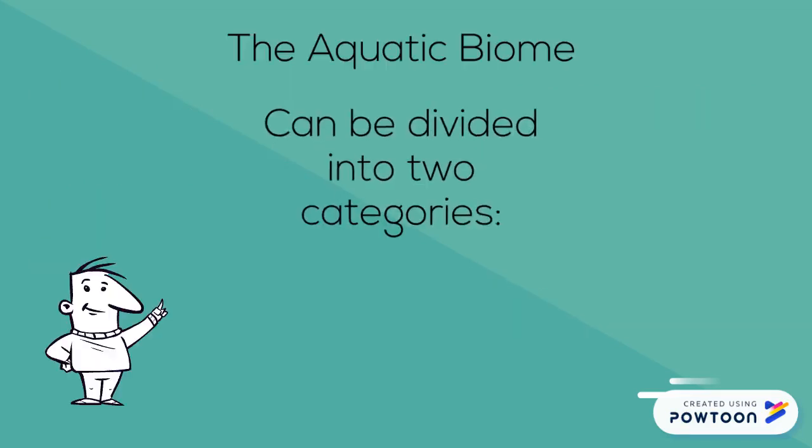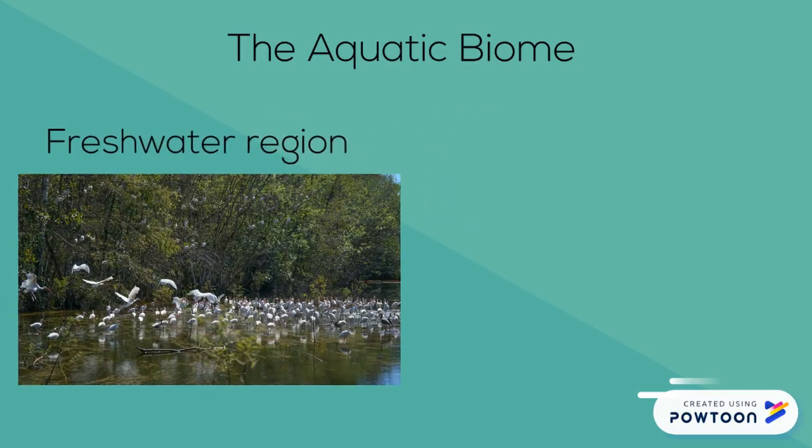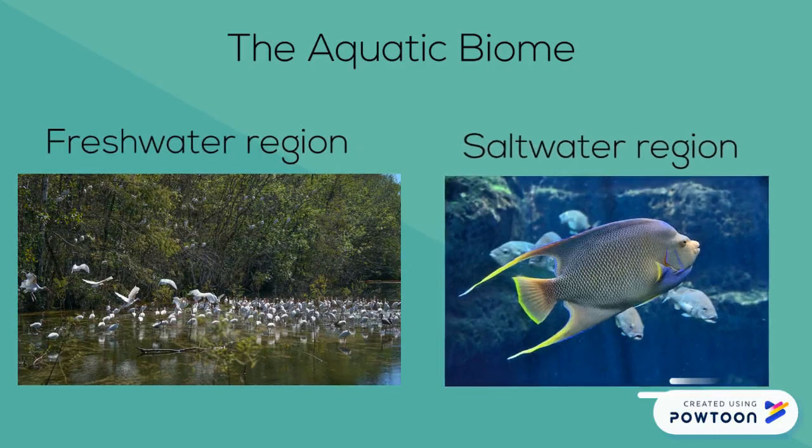Just like all other biomes, the aquatic biome can be divided into two categories: freshwater regions and saltwater regions.